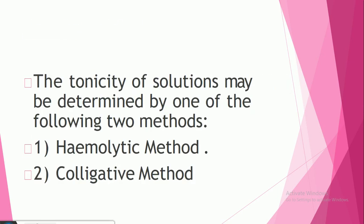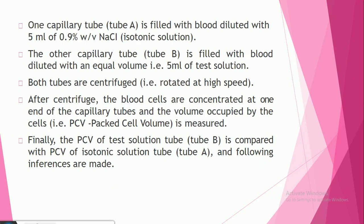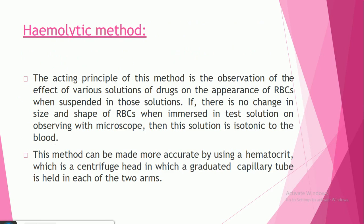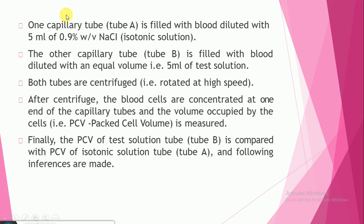Here is the procedure for how you can perform the hemolytic method. First, we take capillary tube A, which is filled with blood. Tube A is diluted with 5 ml of 0.9% weight by volume NaCl isotonic solution. This means 0.9% w/v NaCl — that is, 0.9 grams of NaCl per 100 ml — is used as the standard.